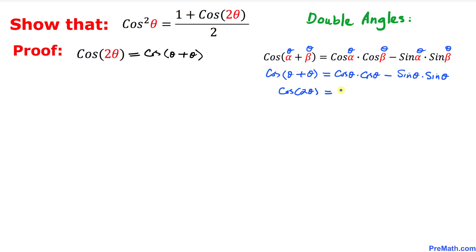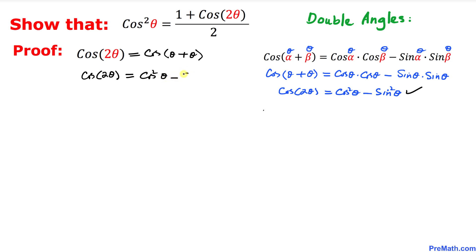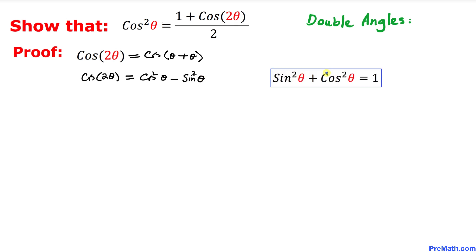So cosine of 2 theta equals cosine squared theta minus sine squared theta.